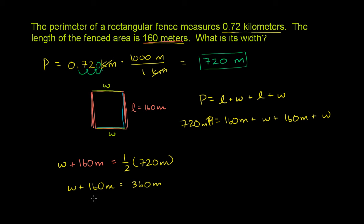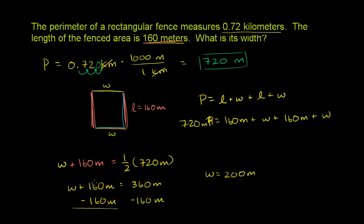So we have the width plus 160 meters equals 360 meters. We can subtract 160 from both sides to solve for it. Or you could do it in your head: something plus 160 is 360, so that something must be 200, since 200 plus 160 is 360. So you could just say the width is 200 meters. More formally, subtract 160 meters from both sides and you are left with width equals 200 meters.